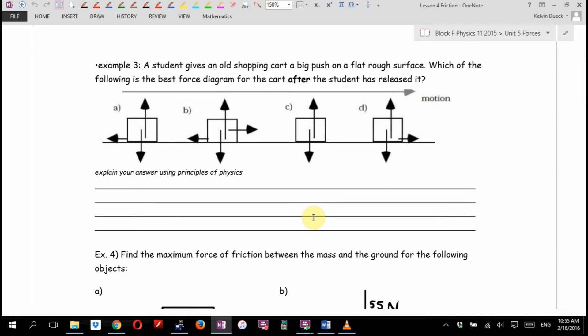A student gives a big old shopping cart a big push on a flat, rough surface. Let's think kind of a lousy paved parking lot. An older paved parking lot, so it's bumpy. Which of the following is the best force or free body diagram for the cart after the student has released it? Here's what we're talking about. Which way is this cart moving? To the right. So, instead of a cart, I've got my chair. We're going to have to use our imagination a little bit. Instead of a rough surface, I've got the linoleum. But here's what we're saying. I'm going to give it a big push and let it go. It's after I let it go. So which is the best free body diagram?